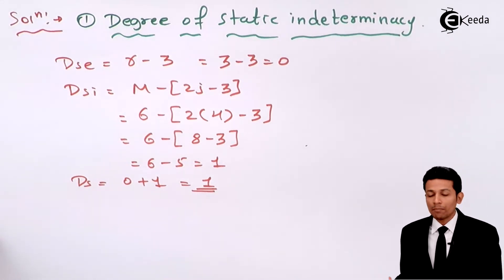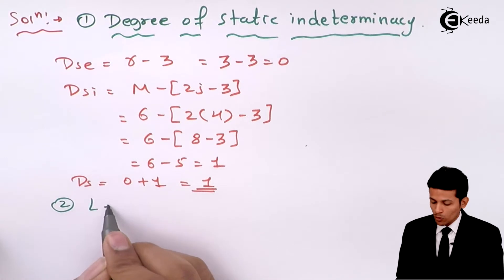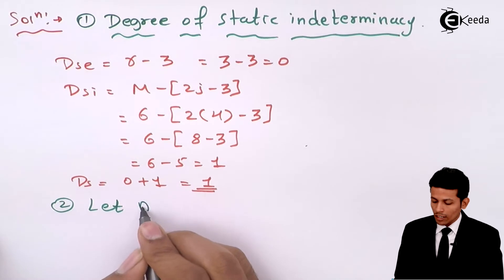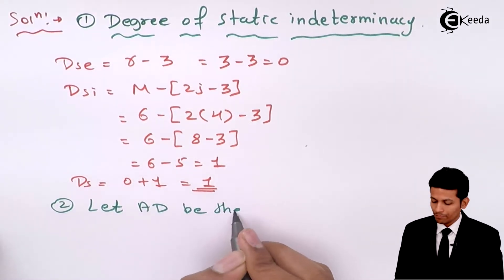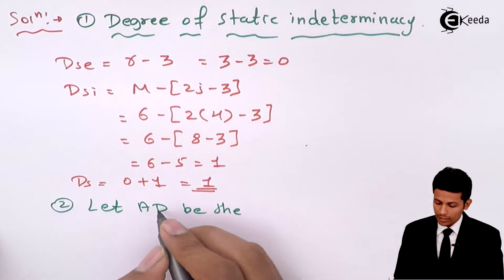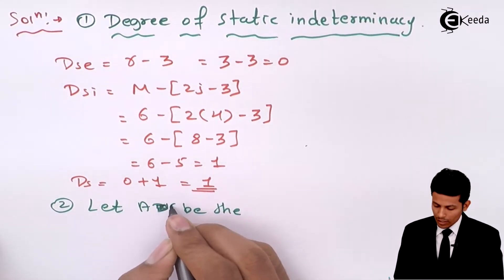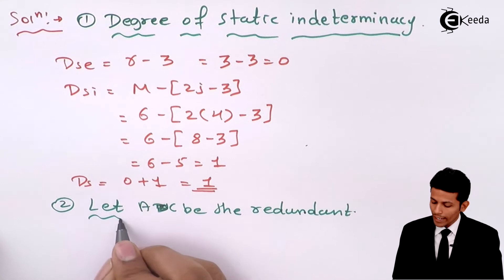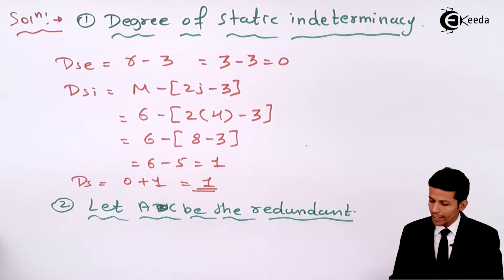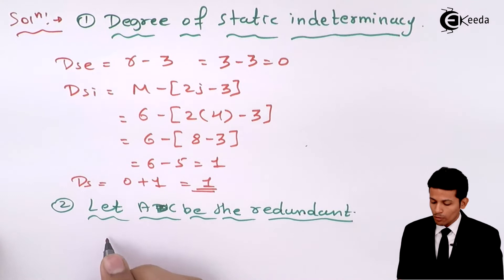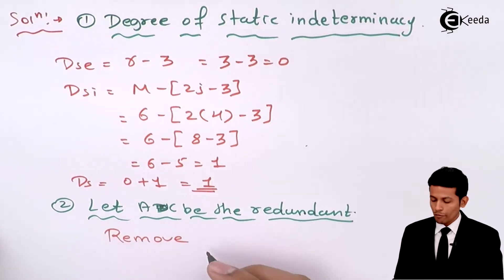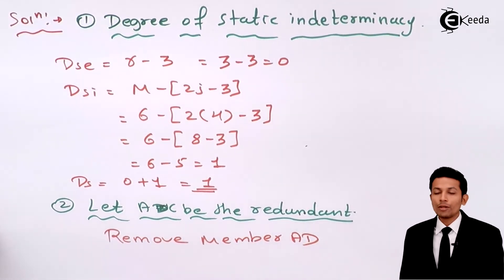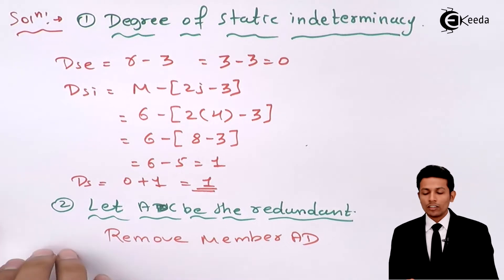Our next step, step number two, is to remove one redundant member. Let AC be the redundant member. We need to remove member AC from the frame to proceed with the flexibility method analysis.